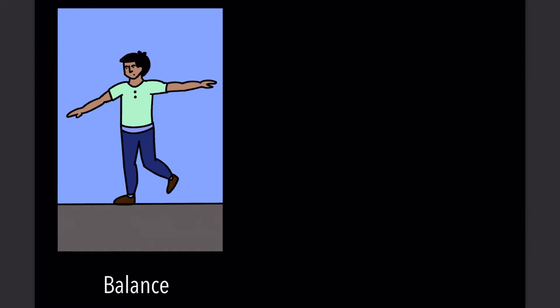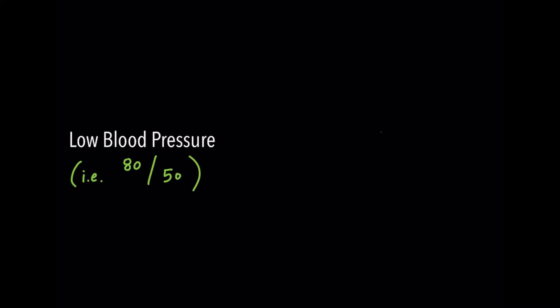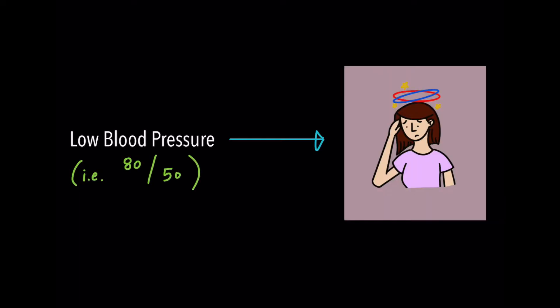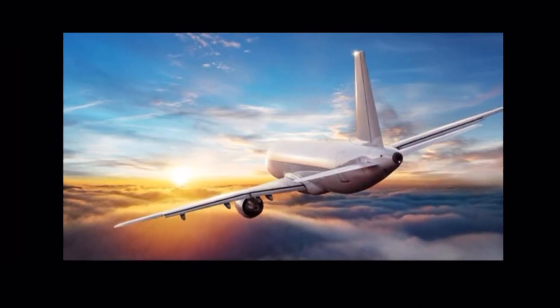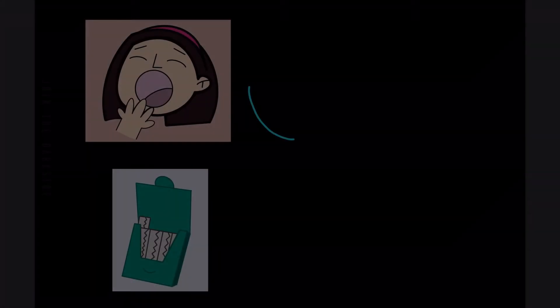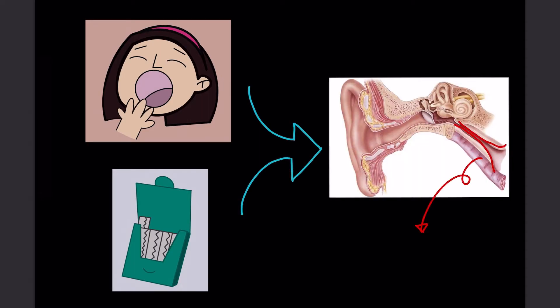Balance issues have many causes: medications, ear infections, a head injury, or anything else that affects the inner ear or brain can cause balance issues. Low blood pressure can lead to dizziness when you stand up too quickly, but this is not related to diseases or disorders of the inner ear. Going on high altitudes, such as going on a flight, may cause changes in equilibrium. Yawning or chewing gum opens the eustachian tube and allows air to flow into or out of the middle ear.